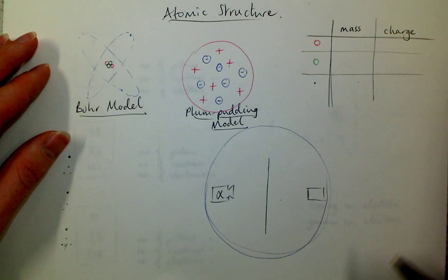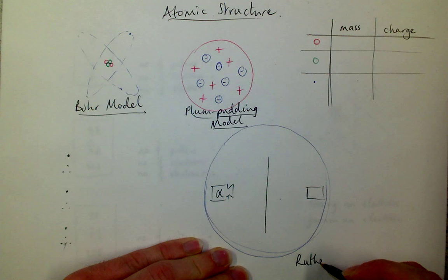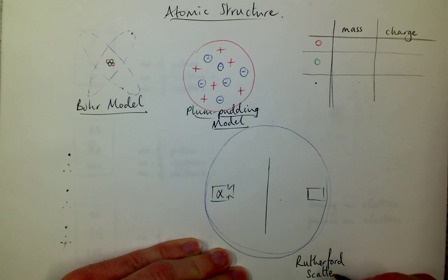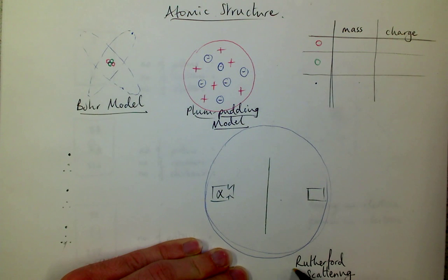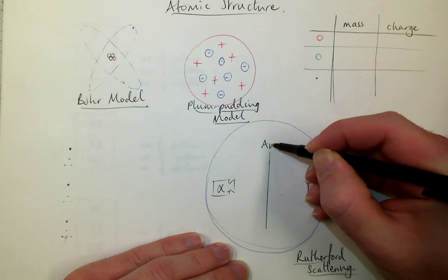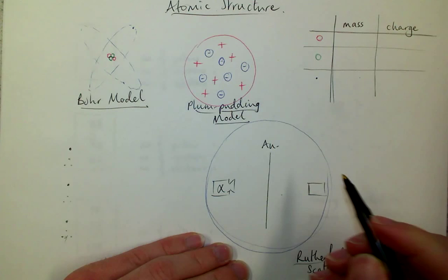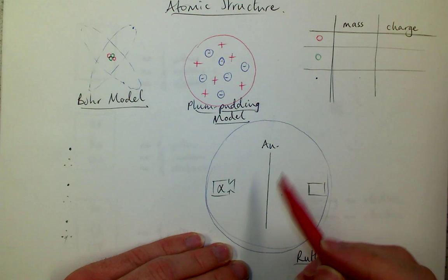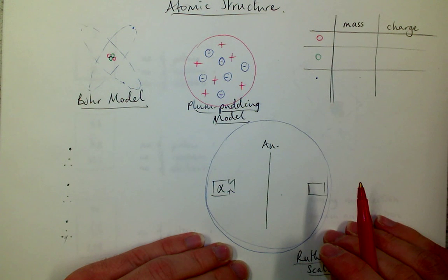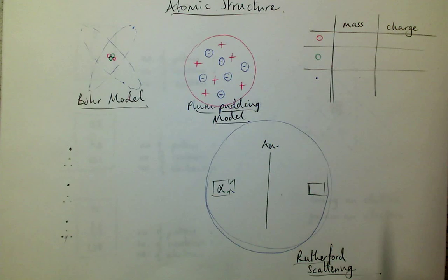This is an experiment that you'll need to be aware of. It was done by Ernest Rutherford. And so we call this Rutherford scattering, or sometimes alpha particle scattering. Because what Rutherford did was he took a very thin gold leaf, Au symbol for gold, and he fired some alpha particles at it. You know the alpha particles, because they're a small positive charge. There'll be another video soon to tell you a bit more about what alpha particles are.